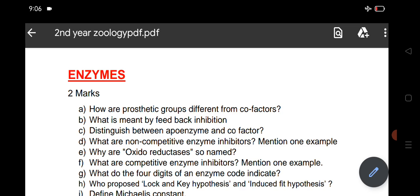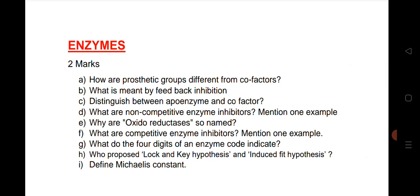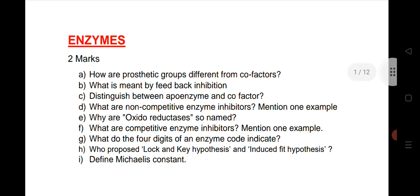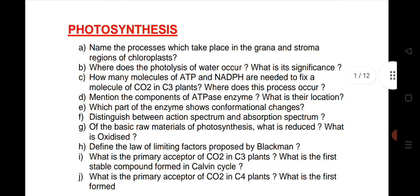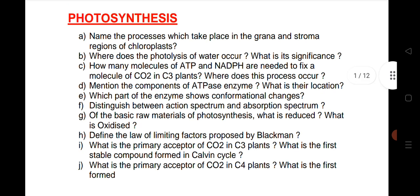Let us see the important questions for 2 marks from the chapter Enzymes. Very important chapter, we have given the very important questions A to I. All important questions very helpful for you to get good marks from this chapter. Next chapter is Photosynthesis. So we have listed from A to J, very important questions. These are the 2 marks questions of Photosynthesis.